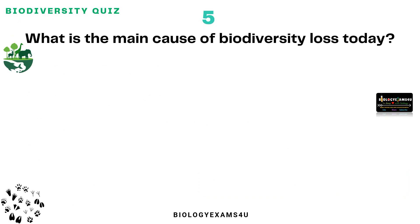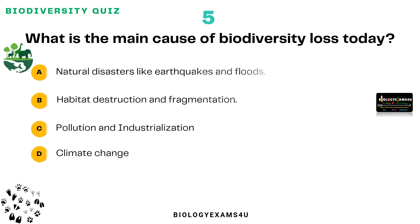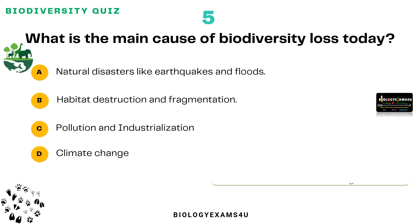Question number five: What is the main cause of biodiversity loss today? Option A: Natural disasters like earthquakes and floods. Option B: Habitat destruction and fragmentation. Option C: Pollution and industrialization. Option D: Climate change. The correct answer is: habitat destruction and fragmentation.